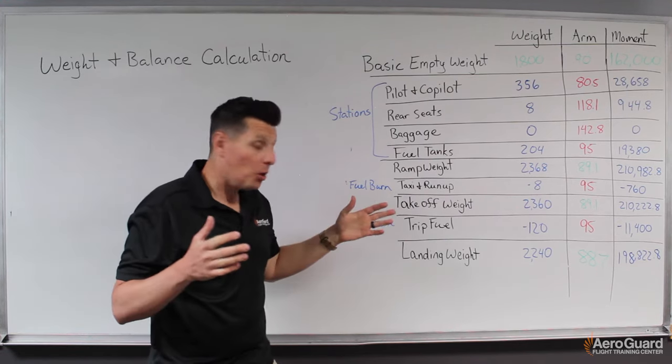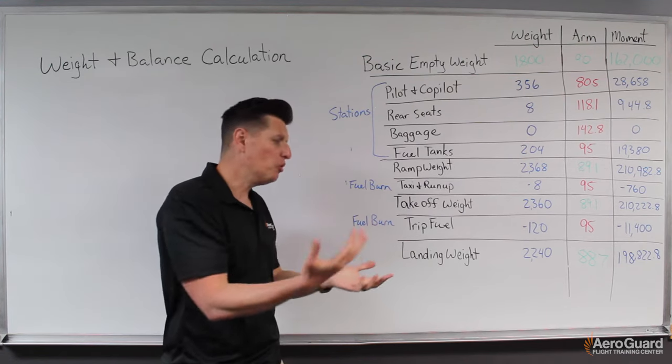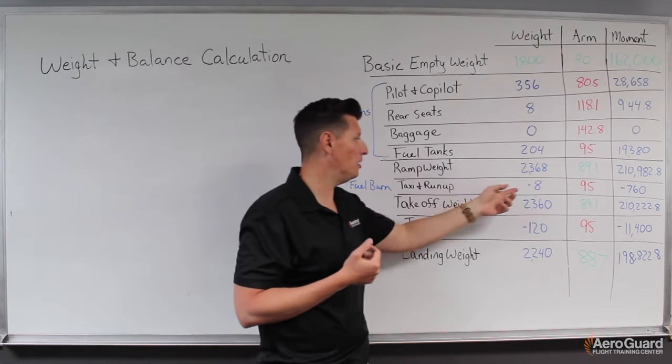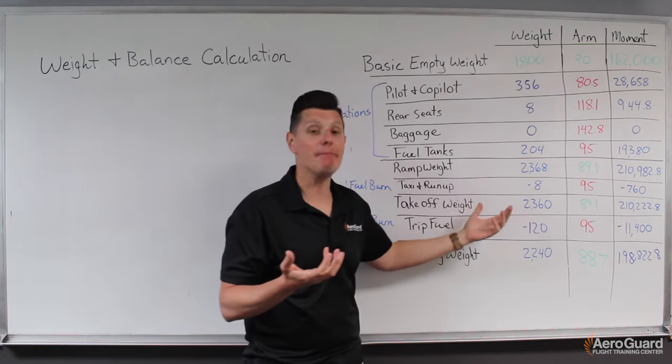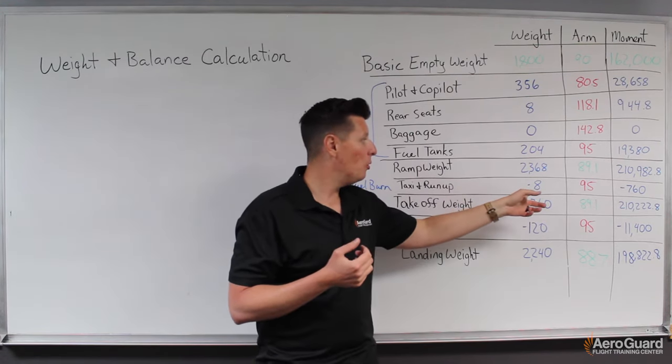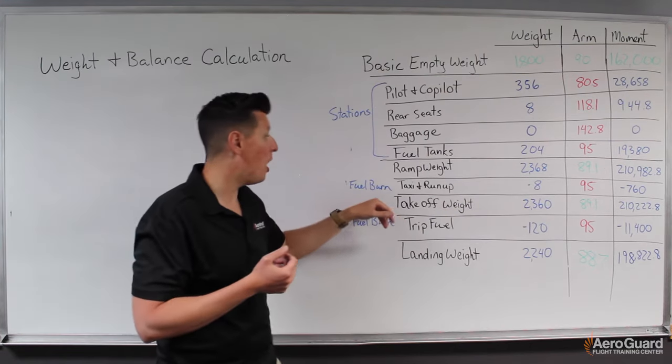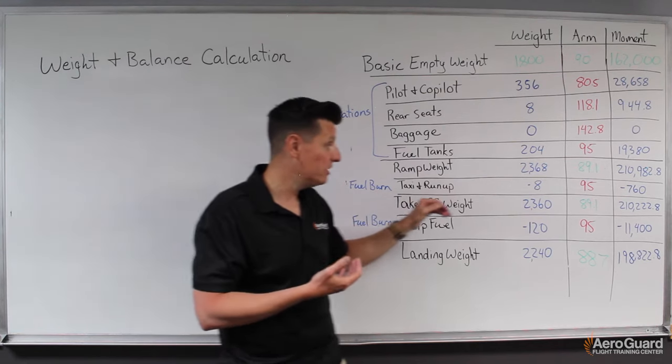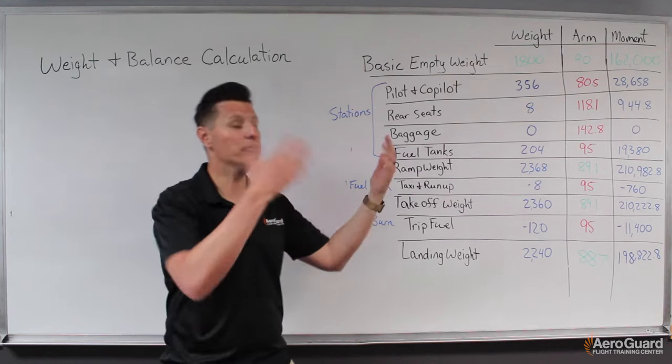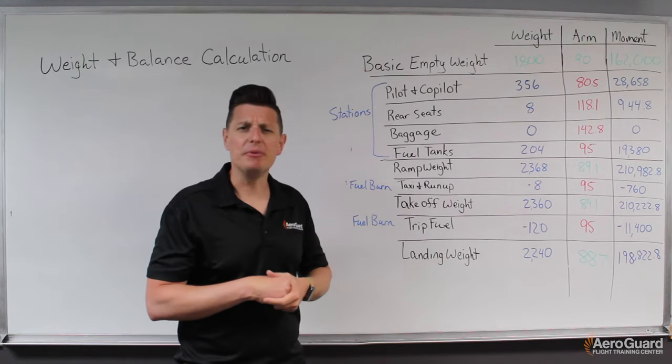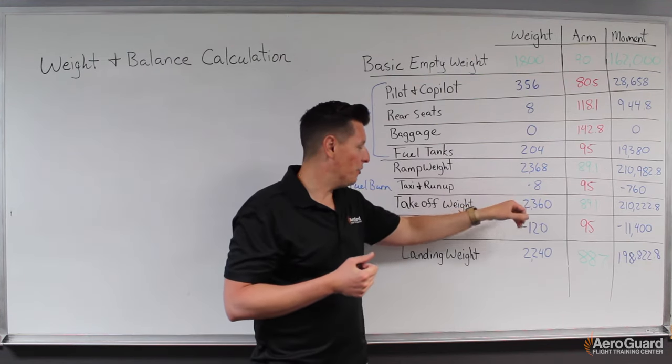Now we get in the plane, start the engine, taxi out, and do a run-up. We can assume a little bit of fuel will burn off in that time frame, typically about eight pounds. We subtract that from both the weight and the moment so we can end up with our exact takeoff weight and center of gravity. Obviously, with only eight pounds removed, there's not going to be a significant effect on the center of gravity or weight.